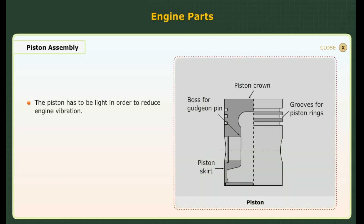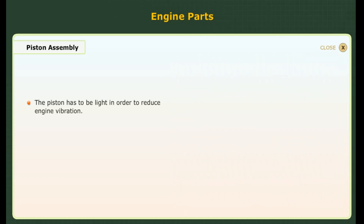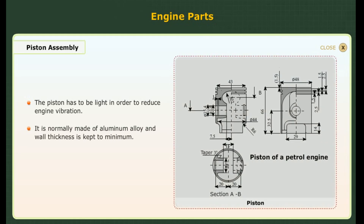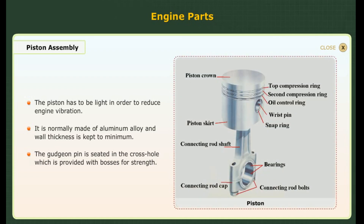Piston assembly. The piston has to be light in order to reduce engine vibration. It is normally made of aluminum alloy and wall thickness is kept to a minimum. The gudgeon pin is seated in the cross hole which is provided with bushes for strength. The figure shows the piston of a petrol engine.